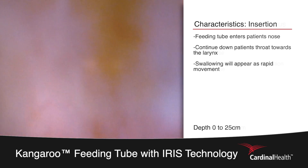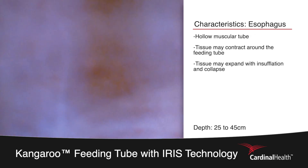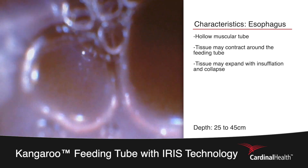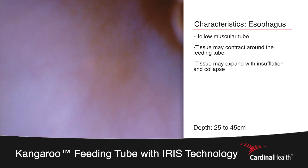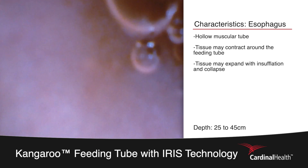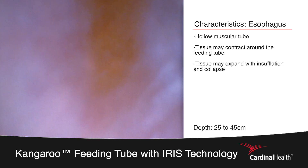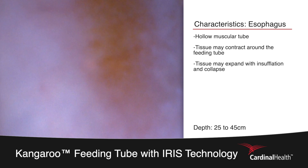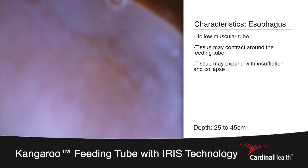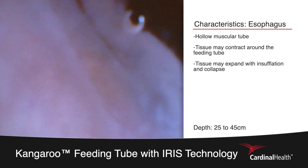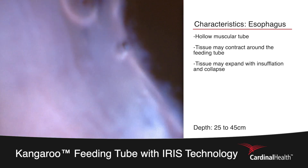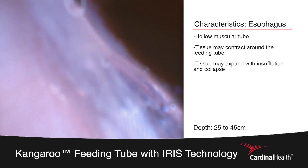At around the 30 centimeter mark we will pause to determine that we are in the correct location. The esophagus is a long, hollow, muscular organ that collapses on itself. You will be looking for the tissue of the esophagus to contract around the tip of the feeding tube. You can use the insufflation bulb to add air and create space, as can be seen in the dark image on the right of the screen.